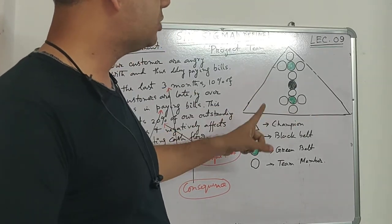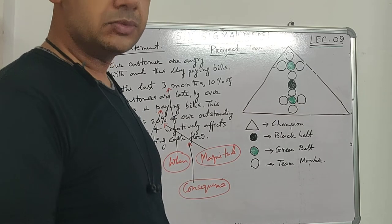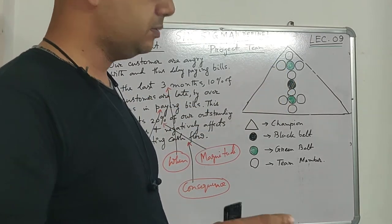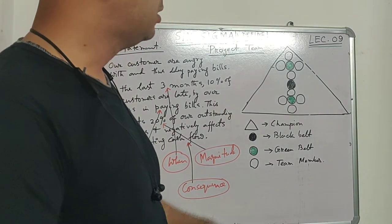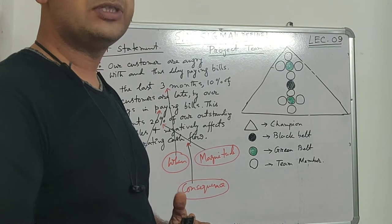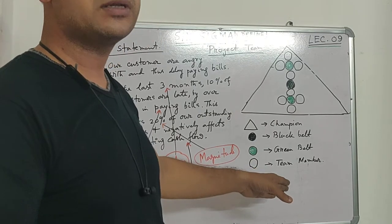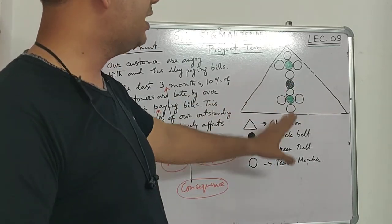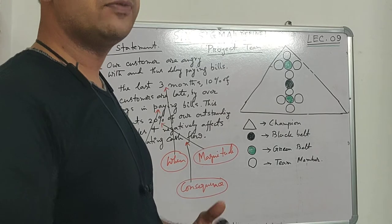There should be one Black Belt who is certified or trained to hand-hold the team throughout the project journey. There will also be two Green Belt holders who have some knowledge of Six Sigma and have carried out one or two projects earlier. The remaining members are fresh; during the journey they will learn Six Sigma methodology and can subsequently become Green Belt holders after completion of the project. After finalizing the team there are various exercises like voice of customer collection, surveys, and related activities.